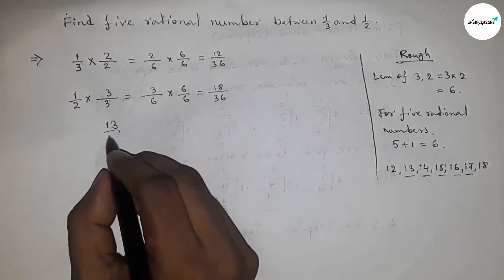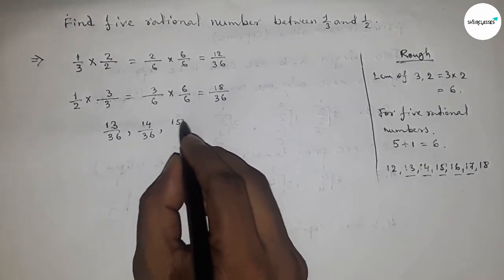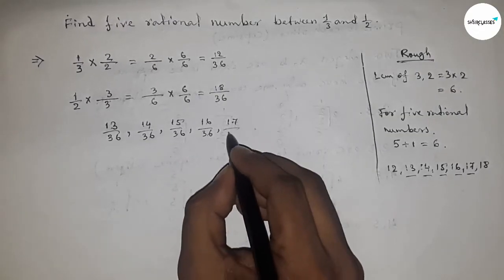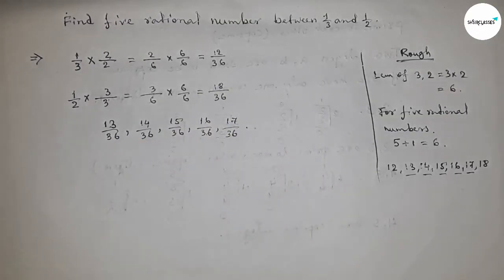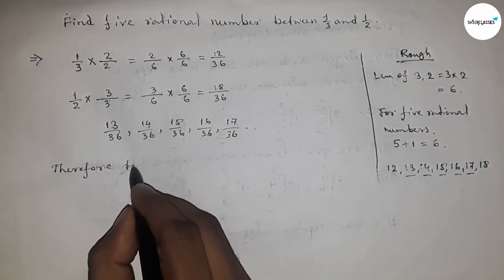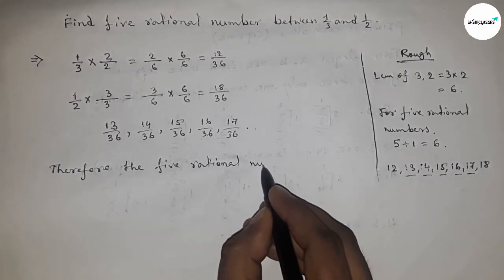So first thirteen by thirty-six, fourteen by thirty-six, fifteen by thirty-six, sixteen by thirty-six, seventeen by thirty-six. These are the five rational numbers.